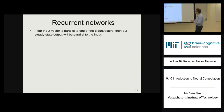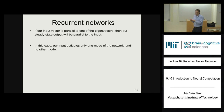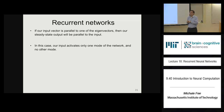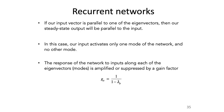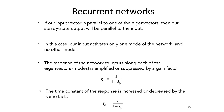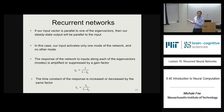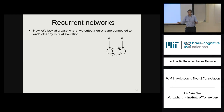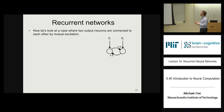If the input is in the direction of one of the eigenvectors, you're activating only one mode of the network, and only that one mode responds. The response will be in the direction of that input, amplified or suppressed by the gain factor 1 over (1 minus lambda), and the time constant will also be increased or decreased by that factor. Let's look at what this looks like graphically for a few simple cases.